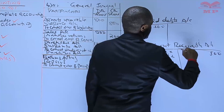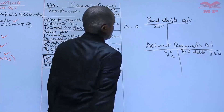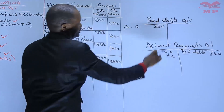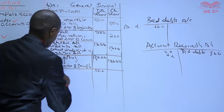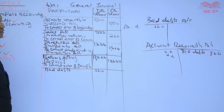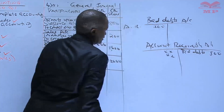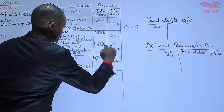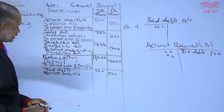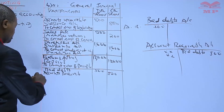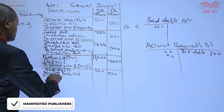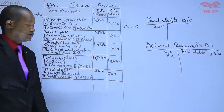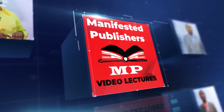In the general journal: bad debts is debited five hundred thousand, and accounts receivable is credited five hundred thousand. This is an error known as an error of omission, so the narration reads: to correct error of omission.